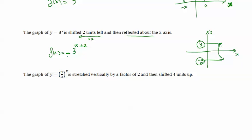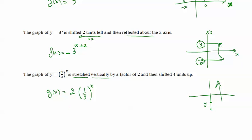In the last example, y = (1/3)^x, which could also be written as 3^(-x), is stretched vertically by a factor of 2 and then shifted 4 units up. Stretching vertically by a factor of 2 means every y becomes 2y, so we multiply by 2 out front. Shifting 4 units up means we add 4. So the new function is u(x) = 2·(1/3)^x + 4. I hope this was helpful.